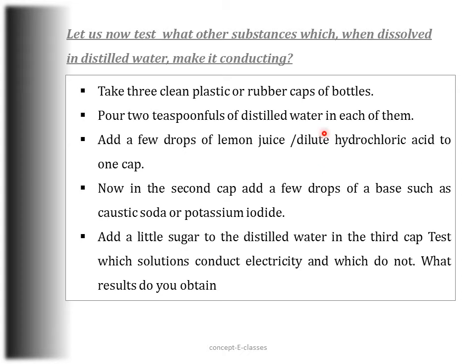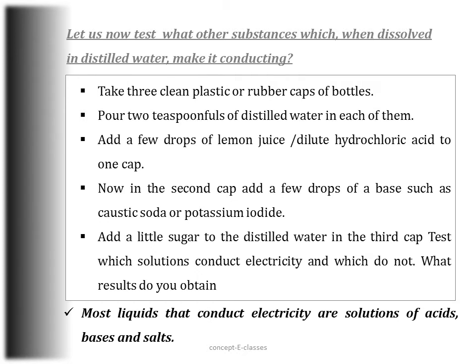In the case of hydrochloric acid, hydrogen and chloride ions are present. In the case of potassium iodide, potassium and iodine ions are present. In both cases the solutions conduct electricity. However, the sugar syrup does not conduct electricity. In general, most liquids that conduct electricity are solutions of acids, bases, and salts.